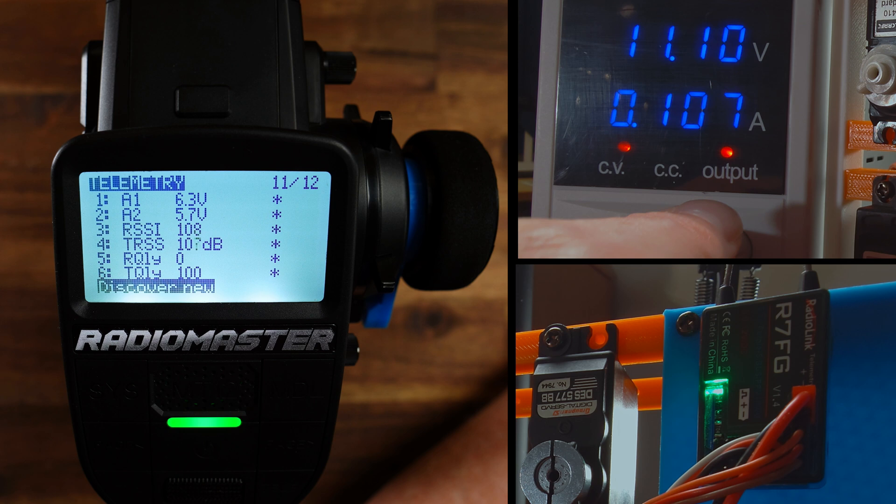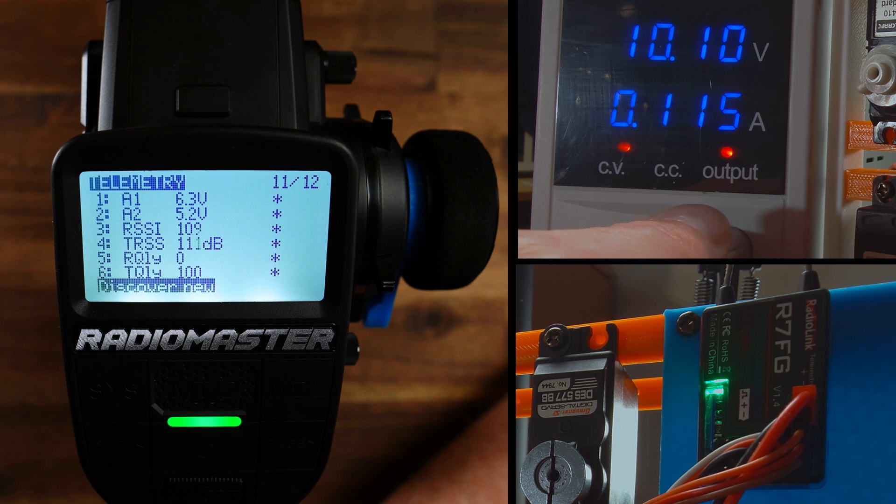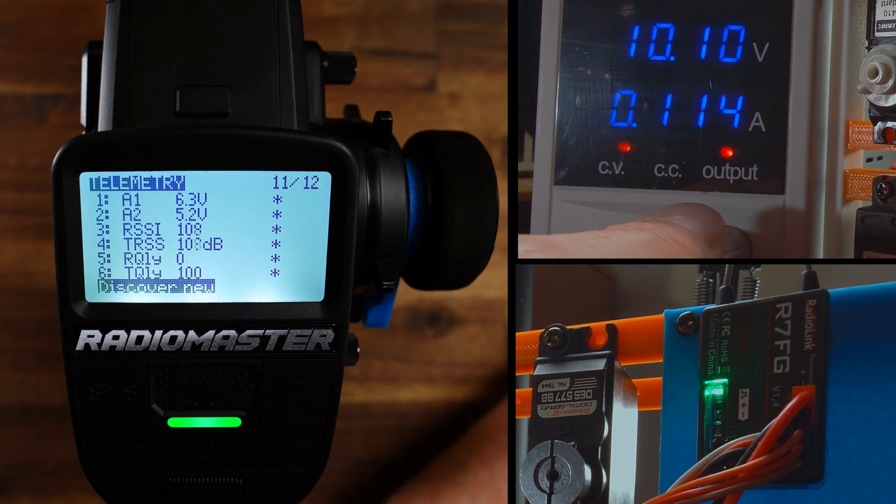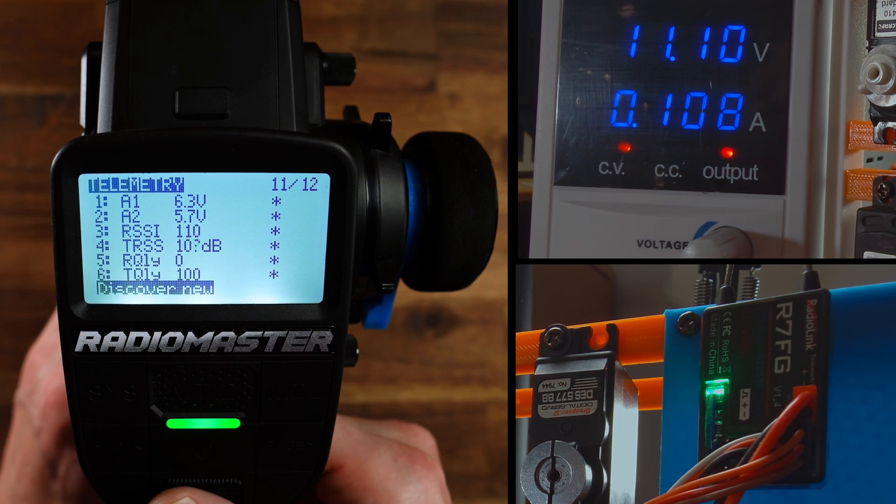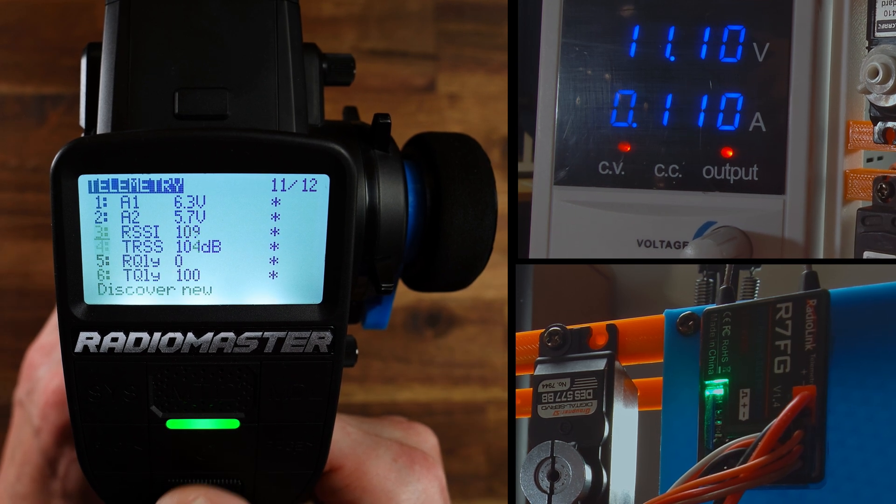And if I turn the voltage here on the PSU, you see the second, the A2, is now 5.2 and now 5.7. So obviously these voltage values are wrong. How can we fix that?